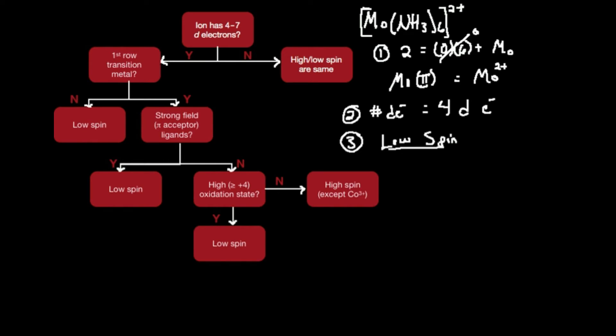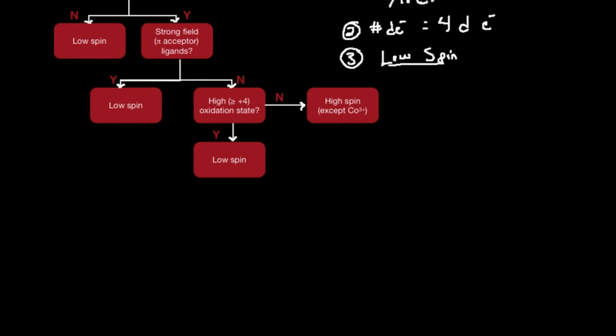Now I need to set up my crystal field diagram. At the bottom I have my T2g d orbitals. At the top, because it's octahedral, I have my eg d orbitals. I'm going to indicate my degenerate energy. From eg to the degenerate energy, this is three-fifths delta octahedral. And from the degenerate energy to T2g, this is two-fifths delta octahedral. This is low spin.